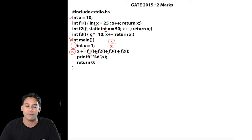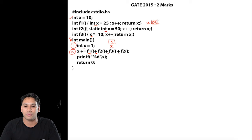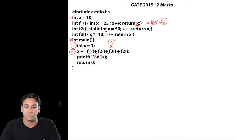So initially we are going to execute the f1 function. In the f1 function, we have int x equal to 25 — this is a local variable storing 25 — and then we do x++, incrementing x to 26, and then we return the value of x. So f1 returns 26.